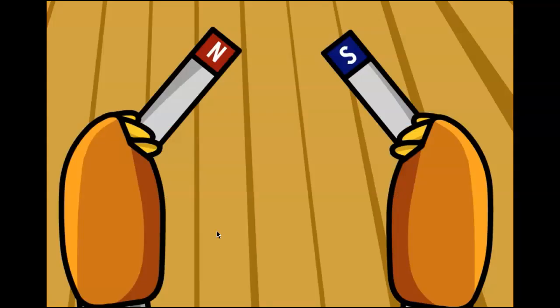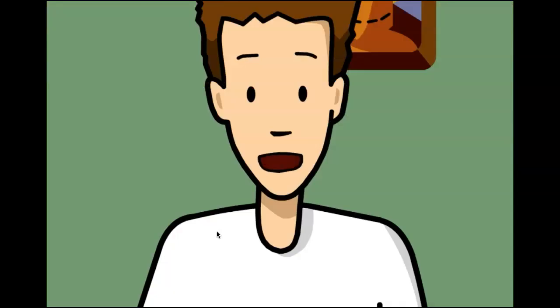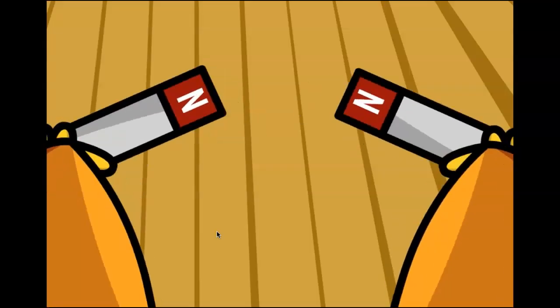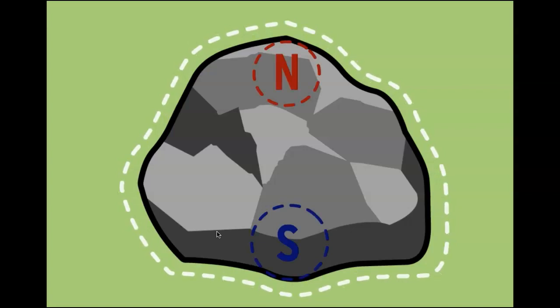It's true that opposites attract. A north pole will attract a south pole. But try to get one north pole together with another north pole, and they're just not interested. You can force them together, but they repel each other. Any magnetic metal has north and south poles too, and weak magnetic fields surrounding them.